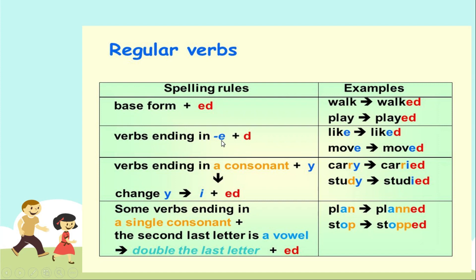Verbs ending in E: cualquier verbo que termine con la letra E, no será necesario ponerle otra E — simplemente se le agrega la letra D. Por ejemplo, el verbo 'like' solo se le agrega la letra D, el verbo 'move' solamente se le agrega la letra D.